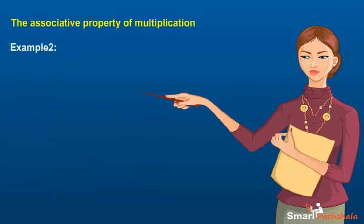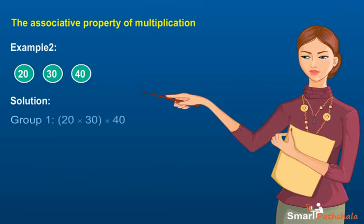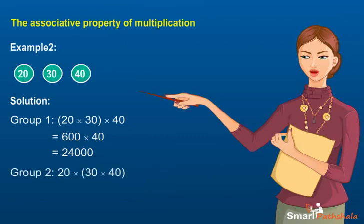Example 2: Explain the associative property of multiplication for the whole numbers 20, 30, and 40. Group 1: (20 × 30) × 40 = 600 × 40 = 24,000. Group 2: 20 × (30 × 40) = 20 × 1,200 = 24,000.